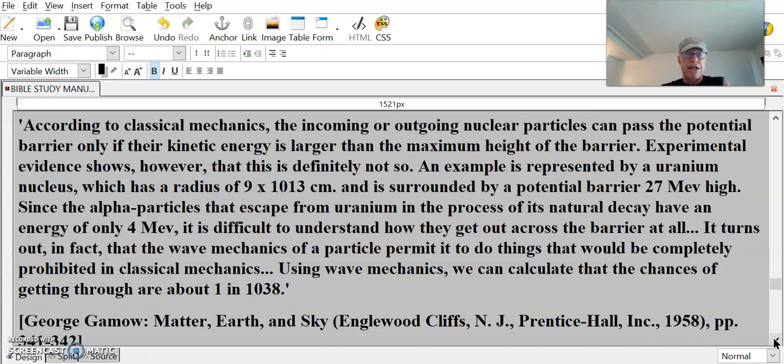According to classical mechanics, the incoming or outgoing nuclear particles can pass the potential barrier only if their kinetic energy is larger than the maximum height of the barrier. Experimental evidence shows, however, that this is definitely not so. An example is represented by a uranium nucleus, which has a radius of 9 x 10^-13 cm and is surrounded by a potential barrier 27 MeV high, million electron volts high.